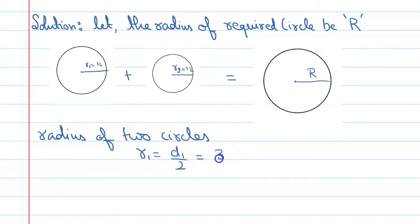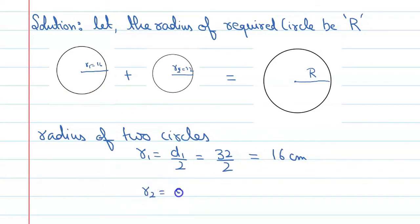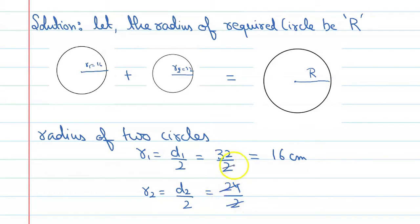R1 is equal to d1 upon 2, which means 32 upon 2, so we get the value of 16 cm. Similarly, R2 is equal to d2 upon 2, which is equal to 24 upon 2, and here we get 12 cm.